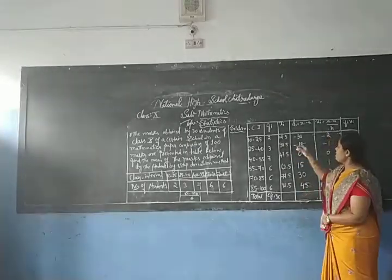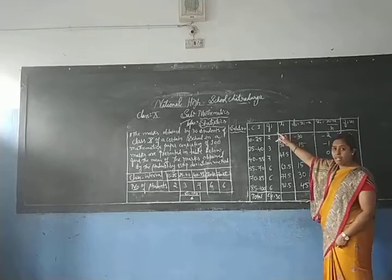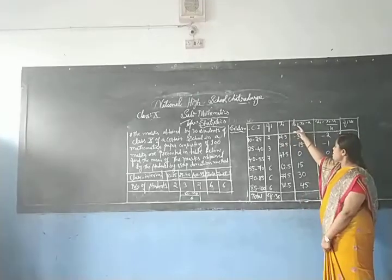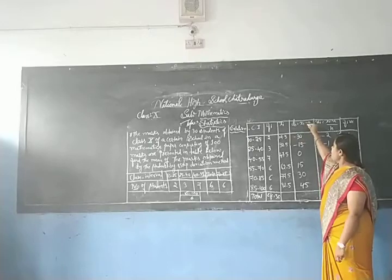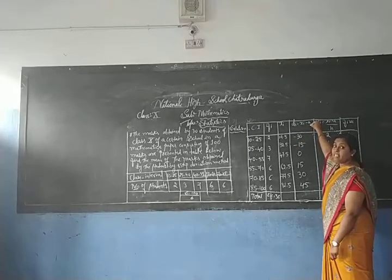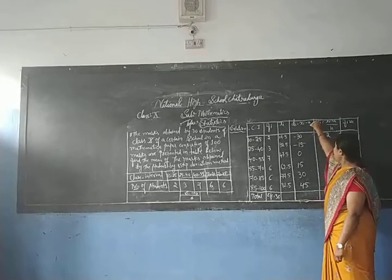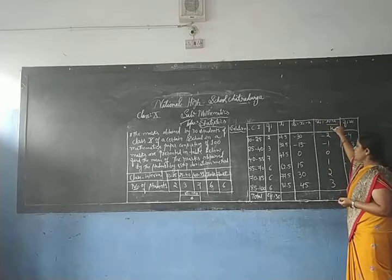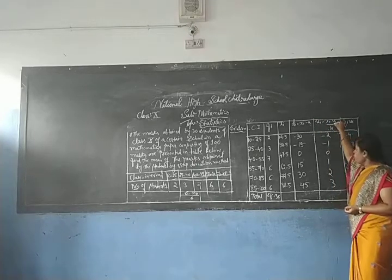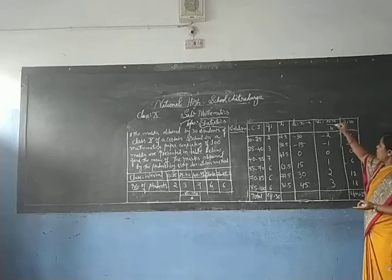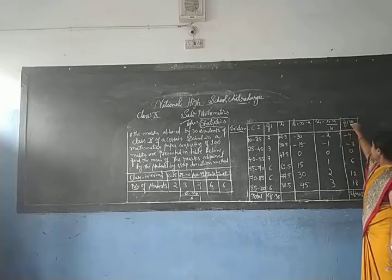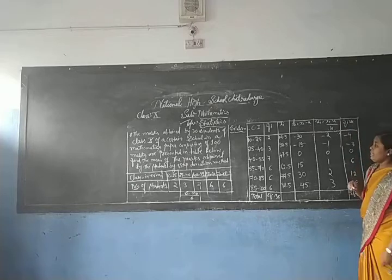The first column is the class interval, the second is frequency (fi), the third is xi (the class mark or midpoint), then di = xi minus a (where a is the assumed mean), then ui = (xi minus a) divided by h (where h is the size of the class interval), and finally fi × ui.